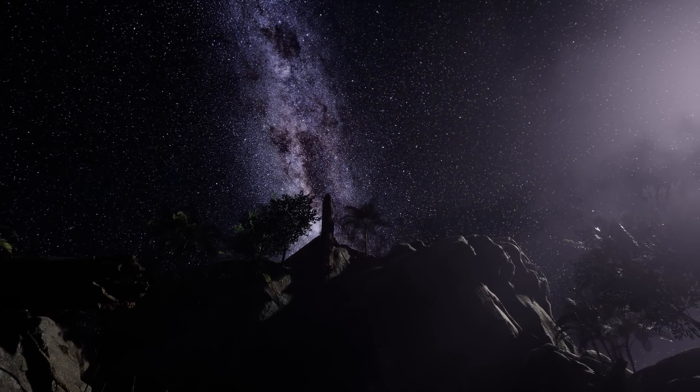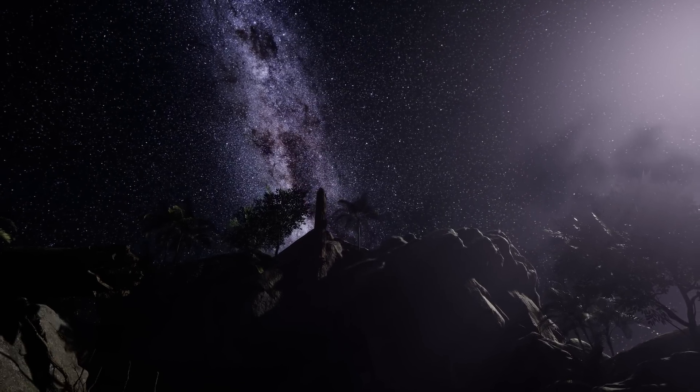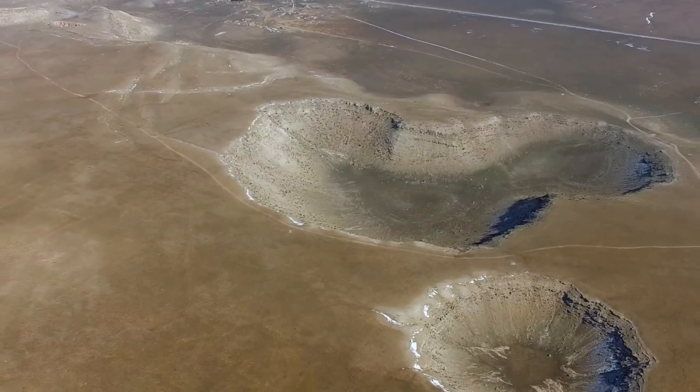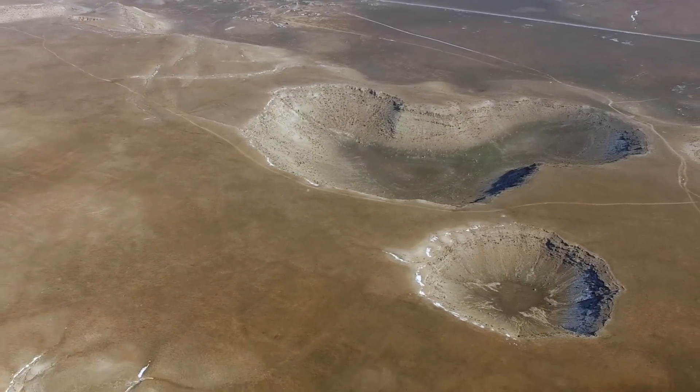The absence of craters on the surface of the moons indicates that they are geologically active and relatively young. There are also signs of surface landslides, which have never before been observed in the Kuiper Belt.